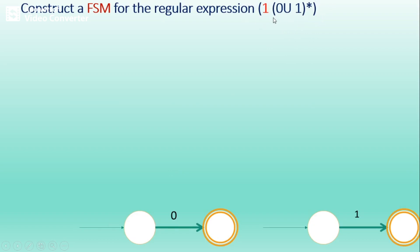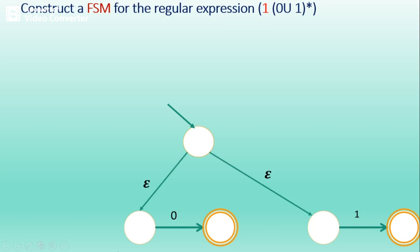The operators involved are concatenation, union, and star. Union is within the parenthesis, so we give more precedence to it. Let's finish 0 union 1 first. To construct 0 union 1, create a new start state and join it to the earlier start states of the machines for 0 and 1 using epsilon transitions. The earlier start states are no longer start states. This gives us the FSM for 0 union 1.